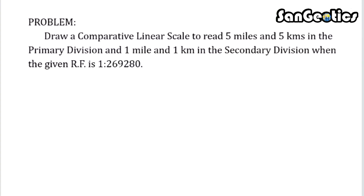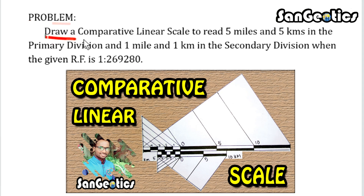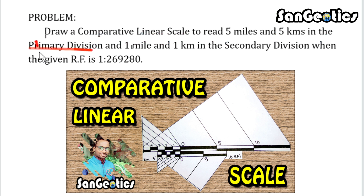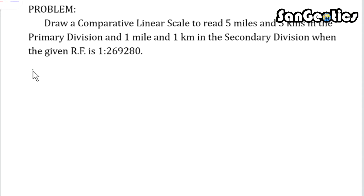First, we solve the problem related to comparative linear scale. The problem: draw a comparative linear scale to read five miles and five kilometers in the primary division and one mile and one kilometer in the secondary division, when the given RF is 1:269280.